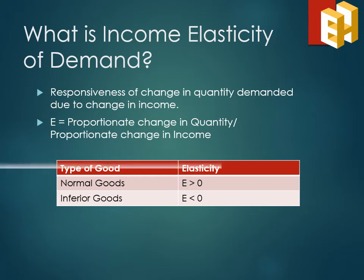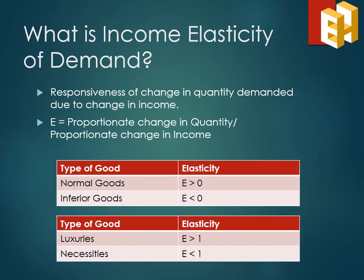Normal goods can further be classified as luxuries or necessities. For luxuries, income elasticity is greater than one — that is, change in demand is more than the change in income. For necessities, income elasticity is less than one but greater than zero — that is, change in demand is less than the change in income.